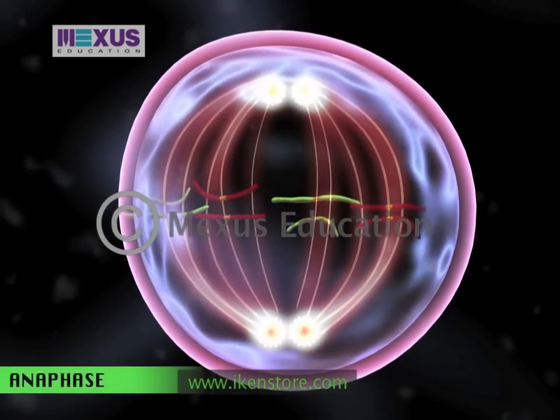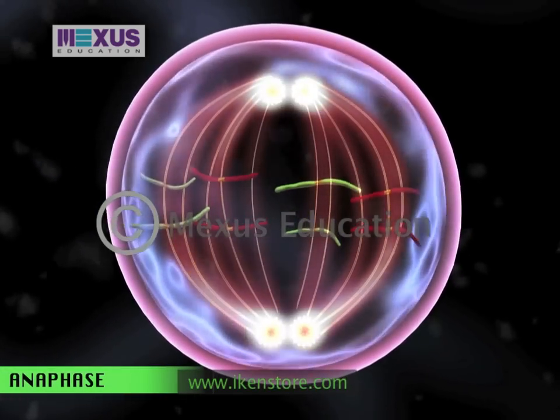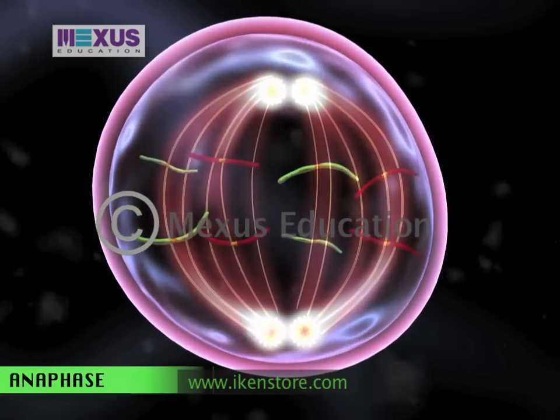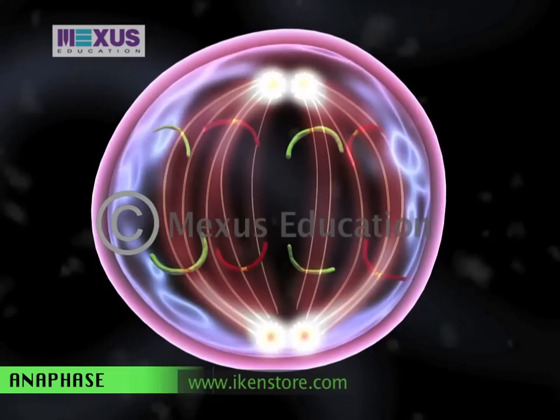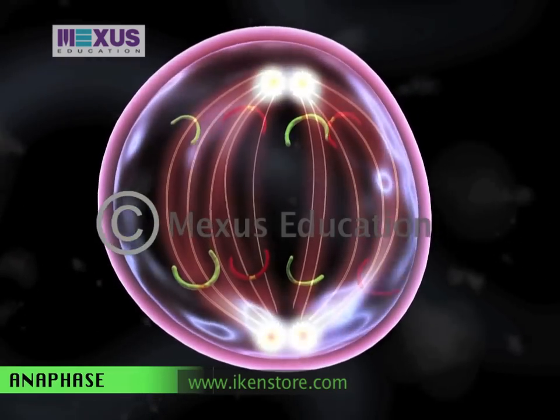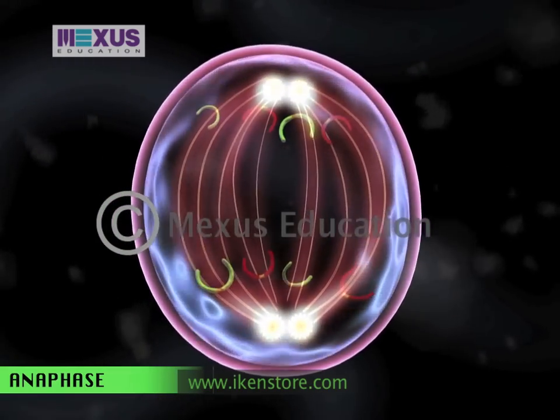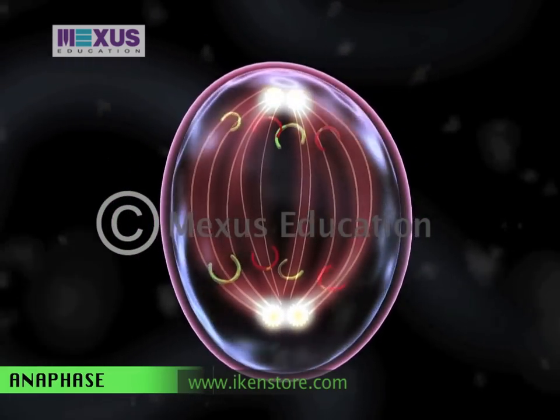The chromatids are then pulled apart and move towards the centrioles. This is known as the anaphase.